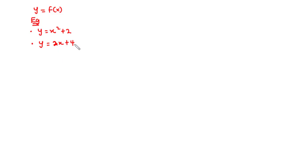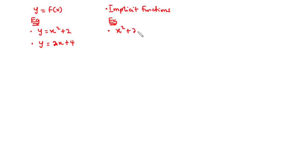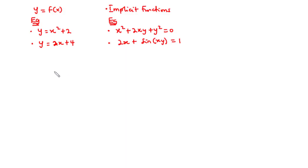Now, we need to understand that sometimes functions are not given in this form. They are given in a more complicated form in which it is sometimes difficult or impossible to express y explicitly in terms of x. Such functions are called implicit functions. Examples include x squared plus 2xy plus y squared equals 0, and also 2x plus sin(xy) equals 1. In today's video, we are going to learn how to find the derivative of an implicit function.